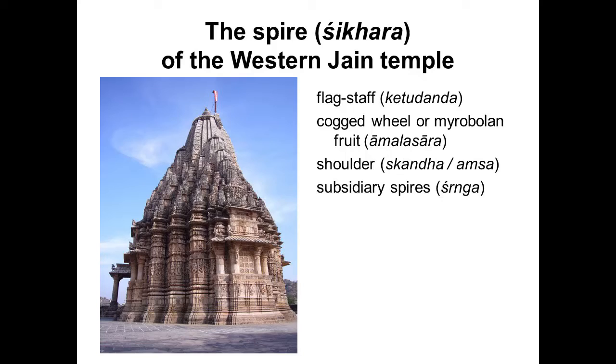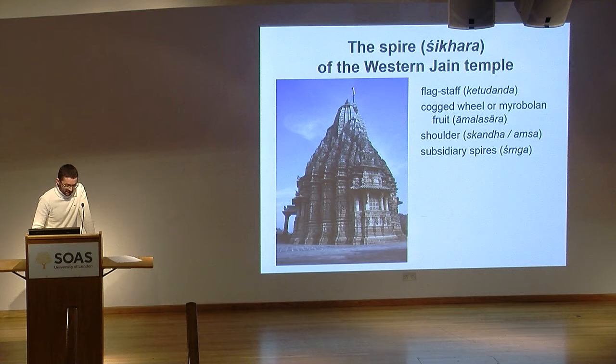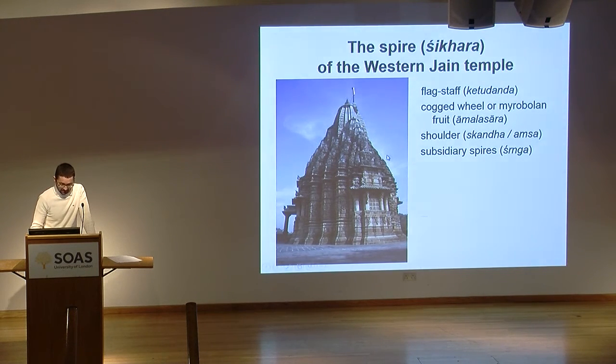Indeed, poets were obviously acquainted with the technical vocabulary that architects and other artisans involved in the building of temples made use of. One may note, for instance, that the right words are used in poetical descriptions for the constituent parts of the tower that stands above the main image of the sacred complex. Not only the spire is called the shikara, but the subsidiary spires or little turrets, as you can see all around the main one, are also accurately called shringa.